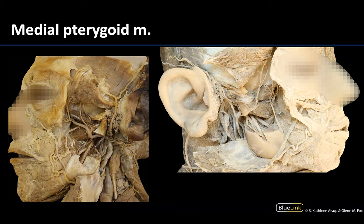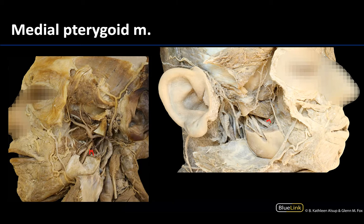Moving to the medial pterygoid muscle. This muscle forms the deep portion of the pterygomassetertic sling — the masseter on the superficial side and the medial pterygoid on the deep side of the ramus of the mandible. It's a little difficult to see the medial pterygoid because the inferior alveolar neurovasculature tends to cover it in these dissections. Think of it as mirroring the masseter muscle on the other side of the ramus.